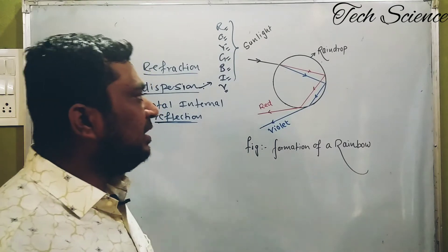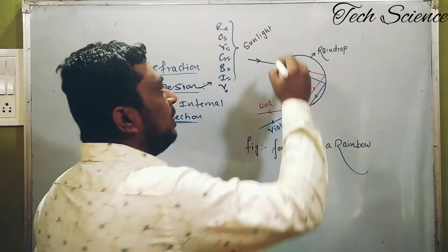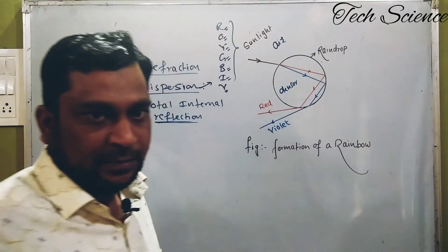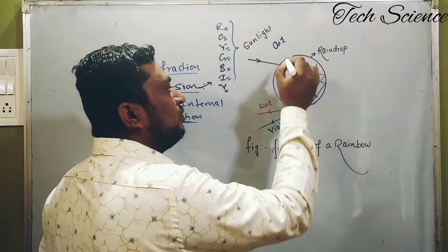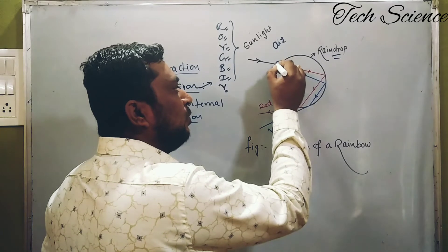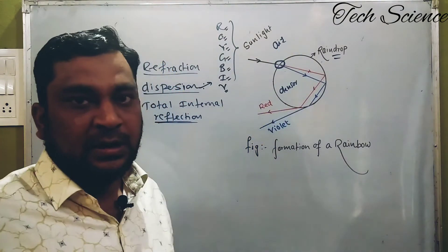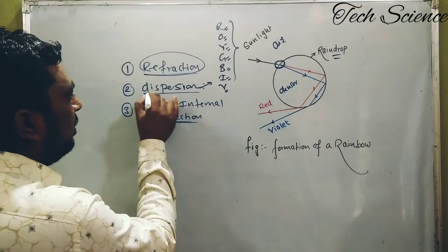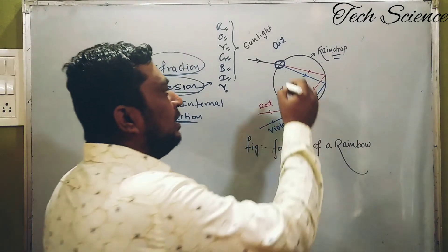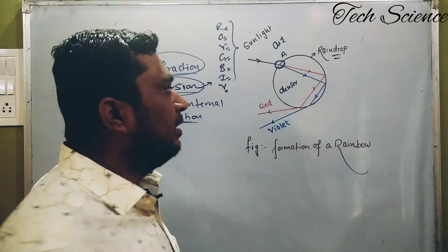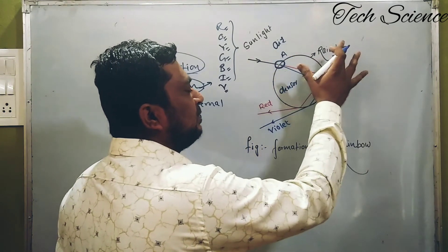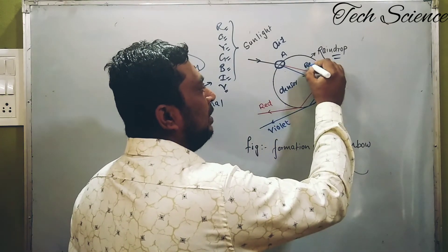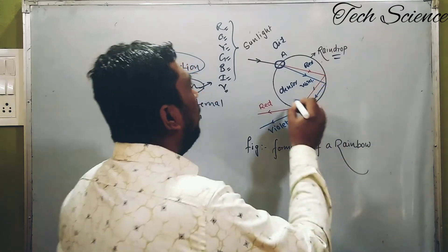Now let's see this raindrop diagram. This is the air medium and the sunlight is striking. This is the denser medium. When the light ray strikes on this water droplet at point A, two phenomena occur: refraction of light and dispersion. The white incident light ray gets split into its seven component colors — the red color and the violet color shown here.